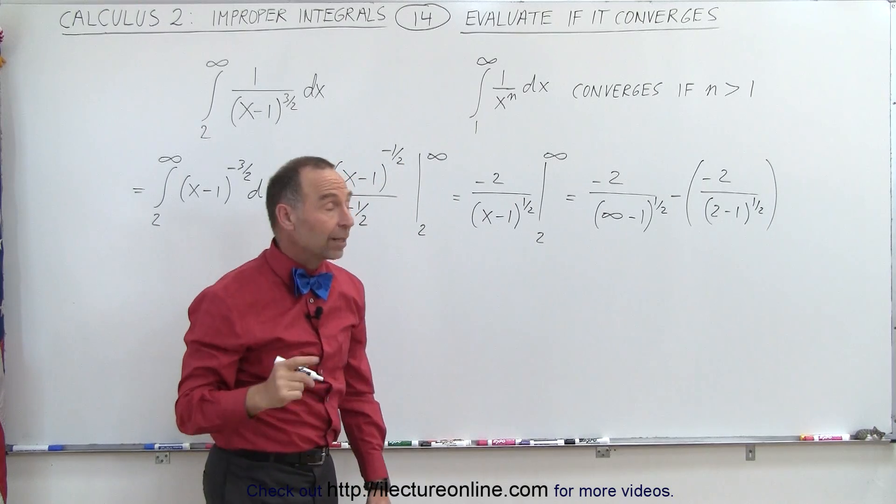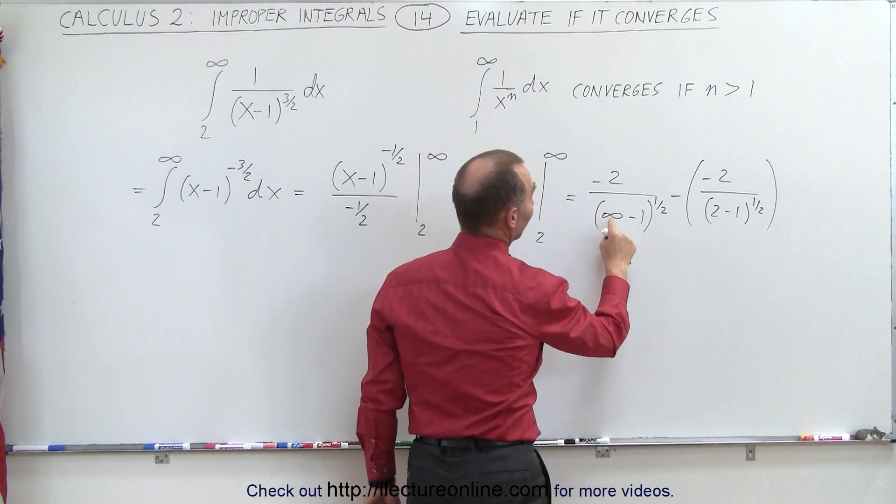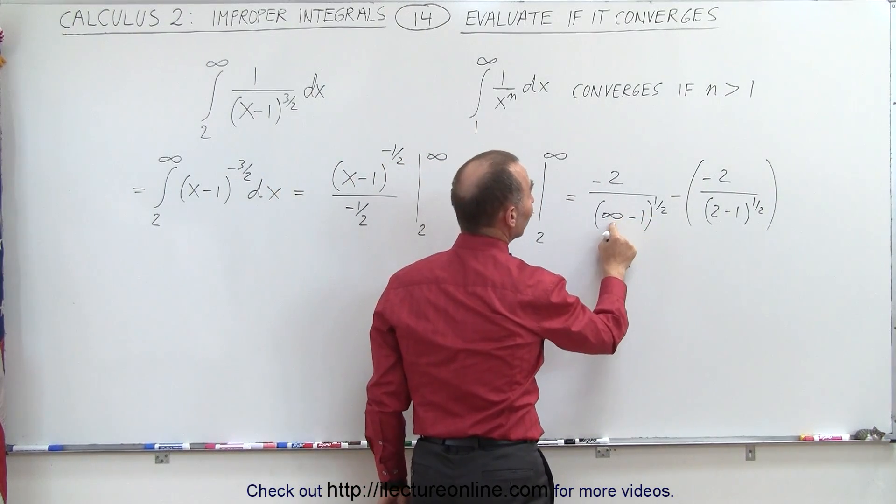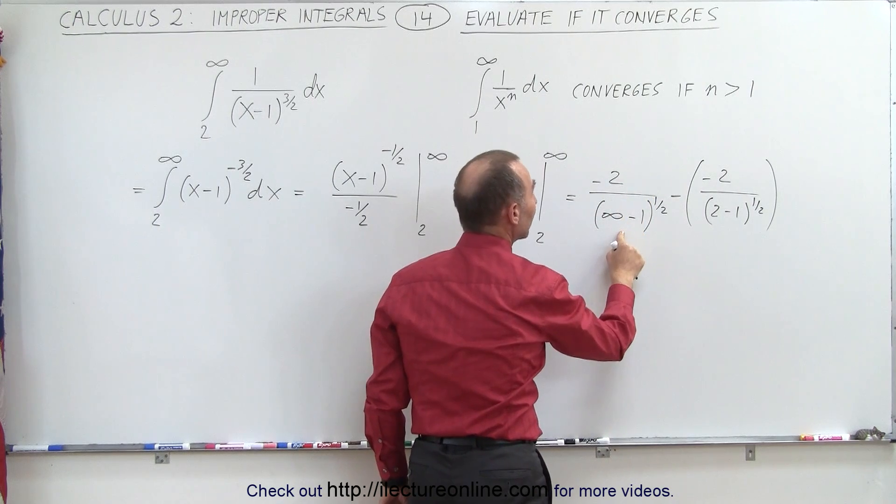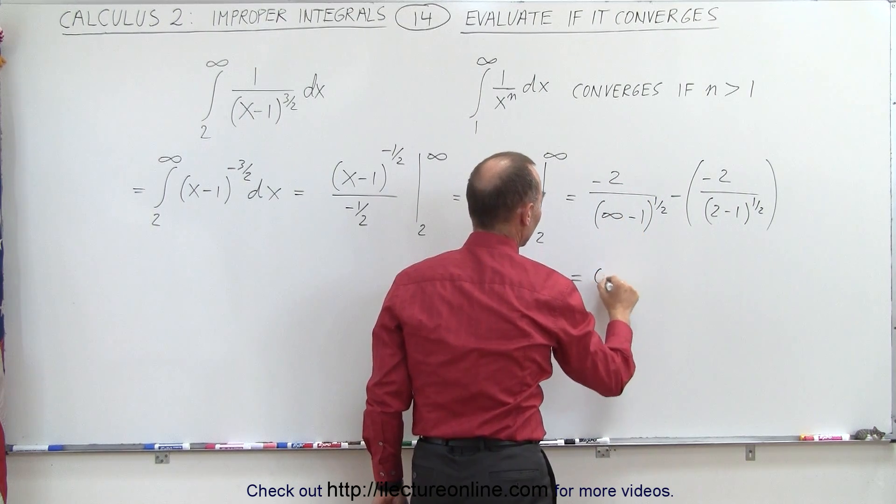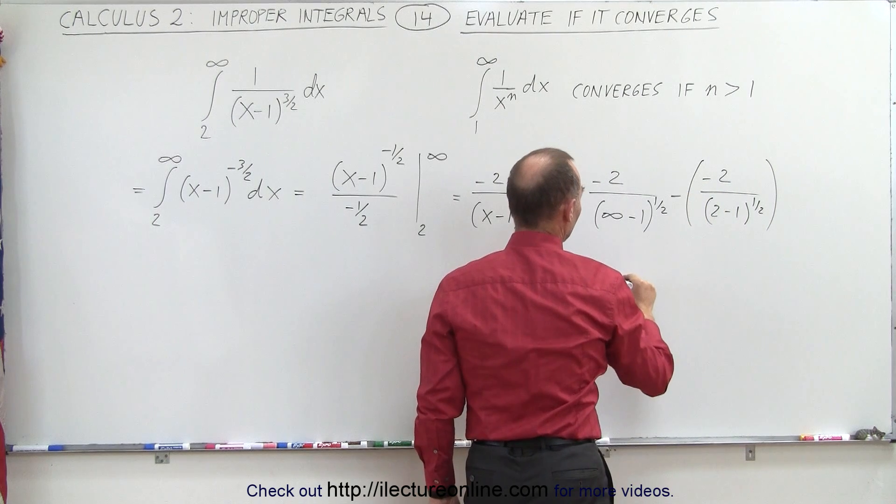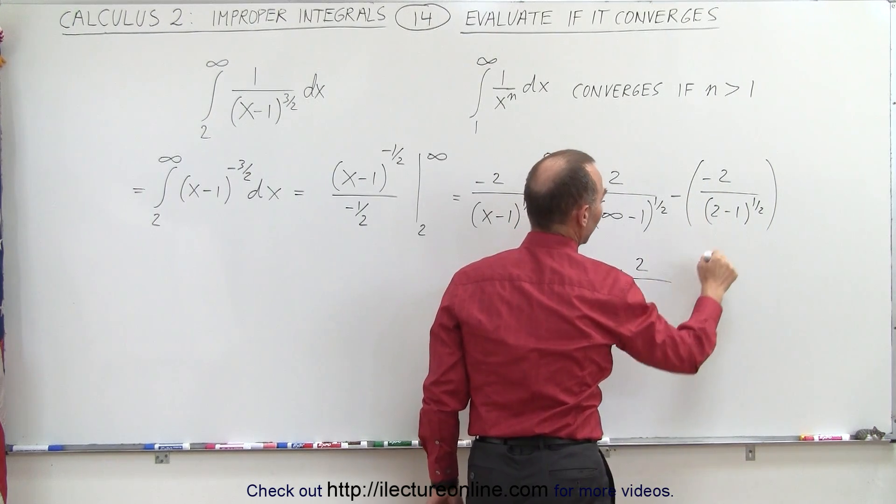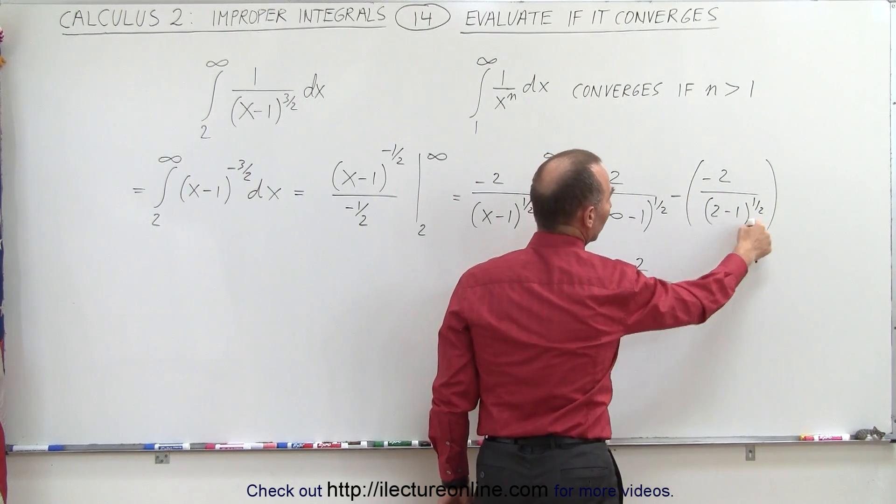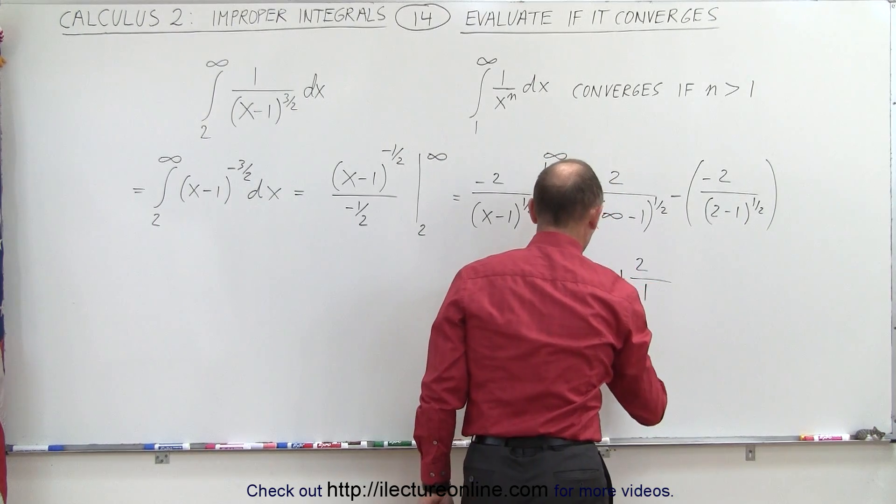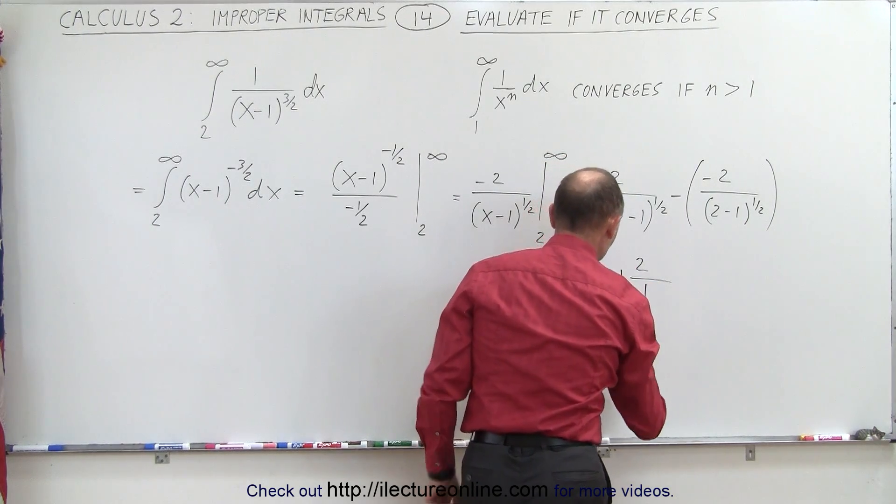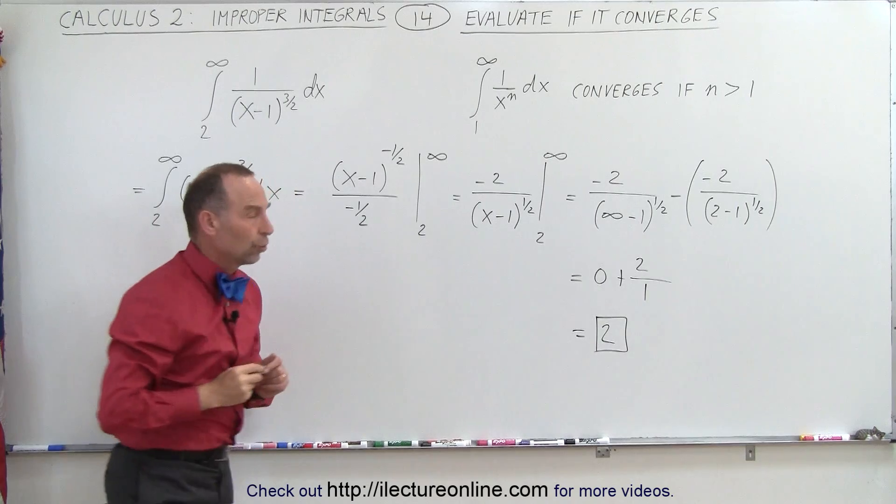Okay, evaluating that first fraction, notice that infinity to the 1 half power is still infinity, and anything divided by infinity is 0. So this becomes 0. And the minus times the minus becomes plus, so plus 2 divided by the square root of 1, which is simply 1, or the total value of that integral equals 2.